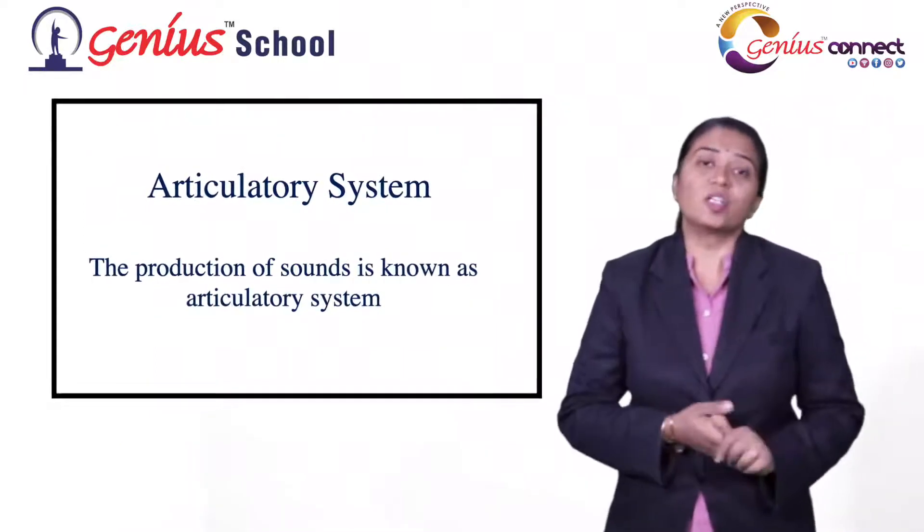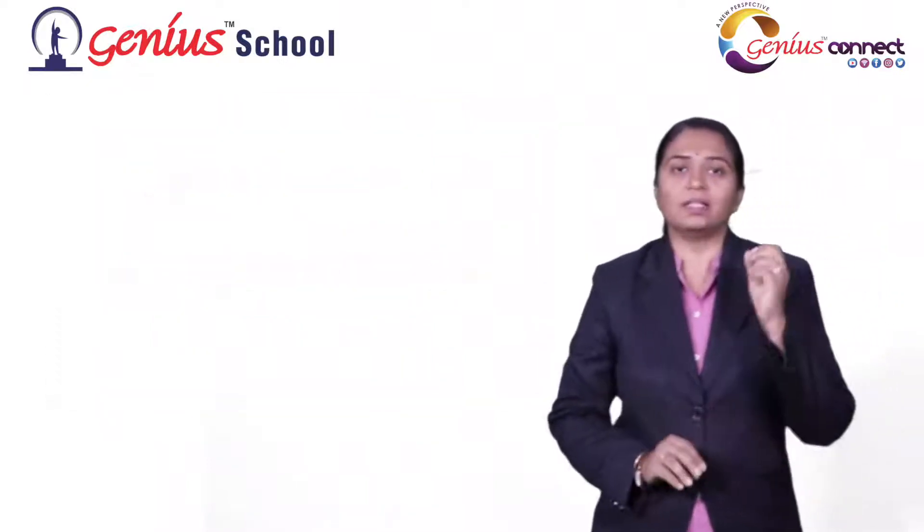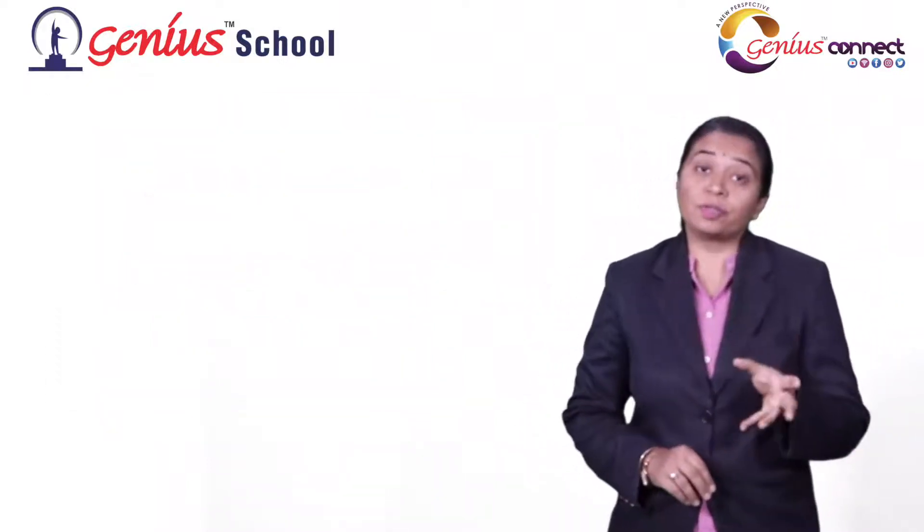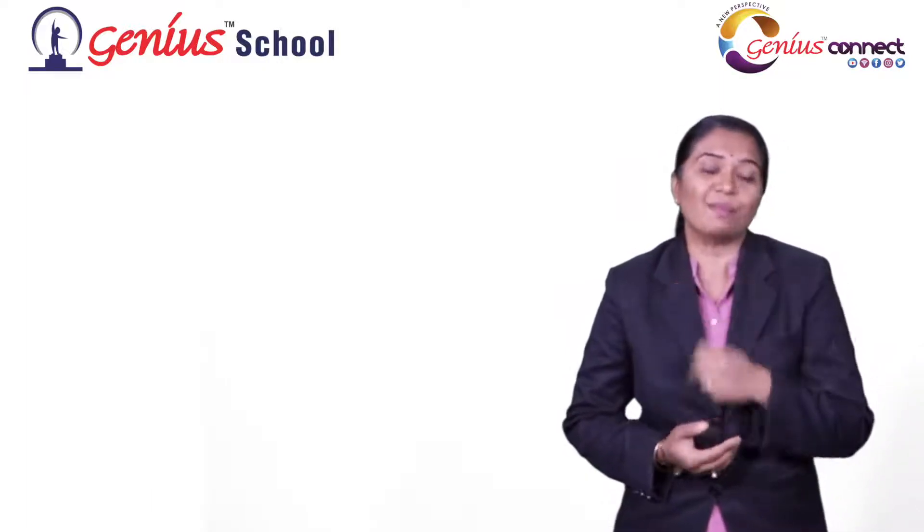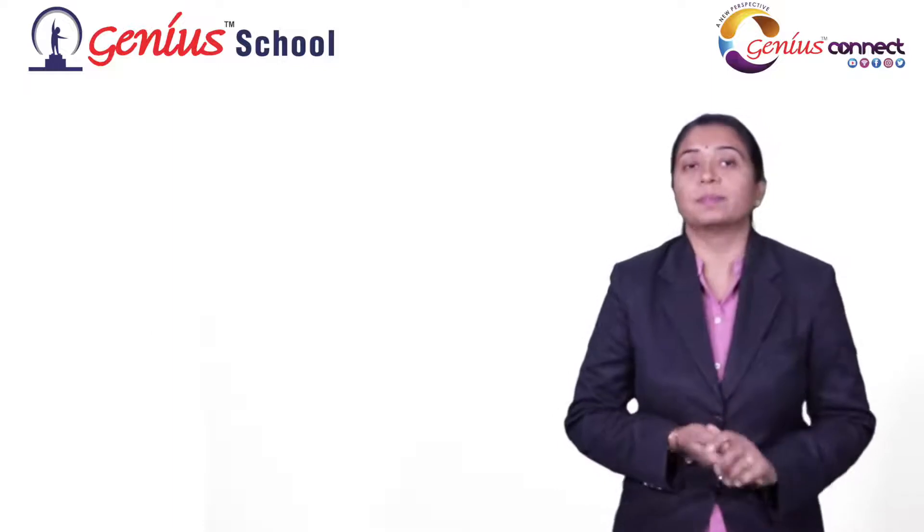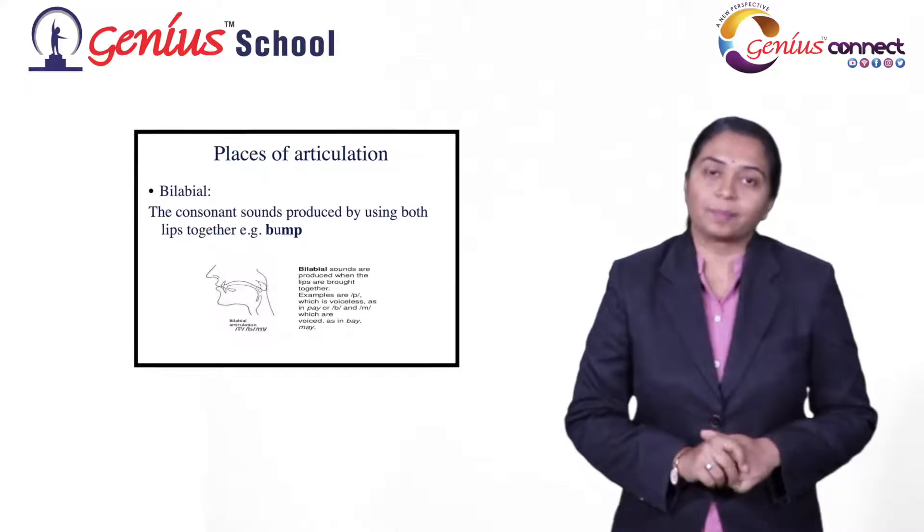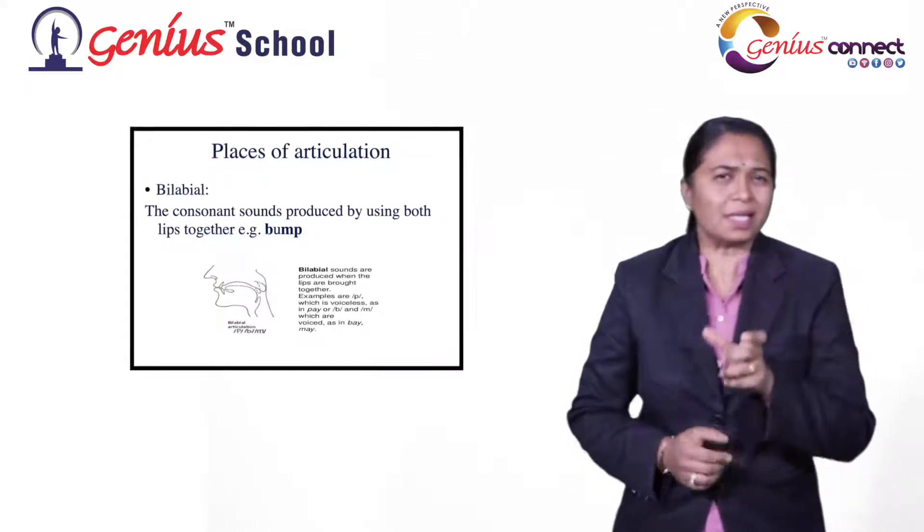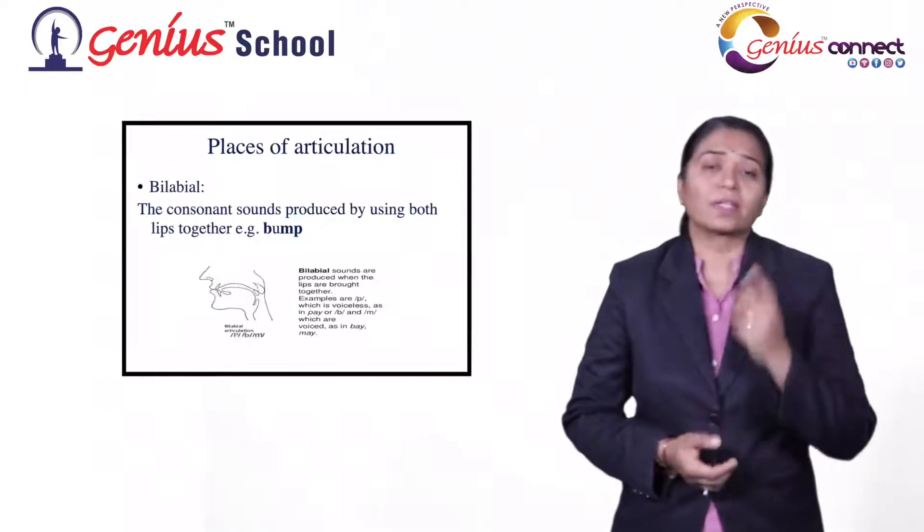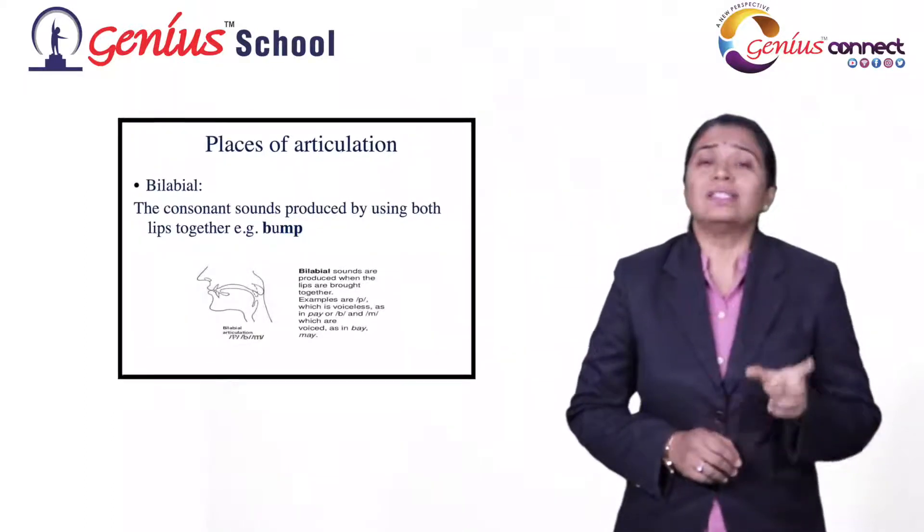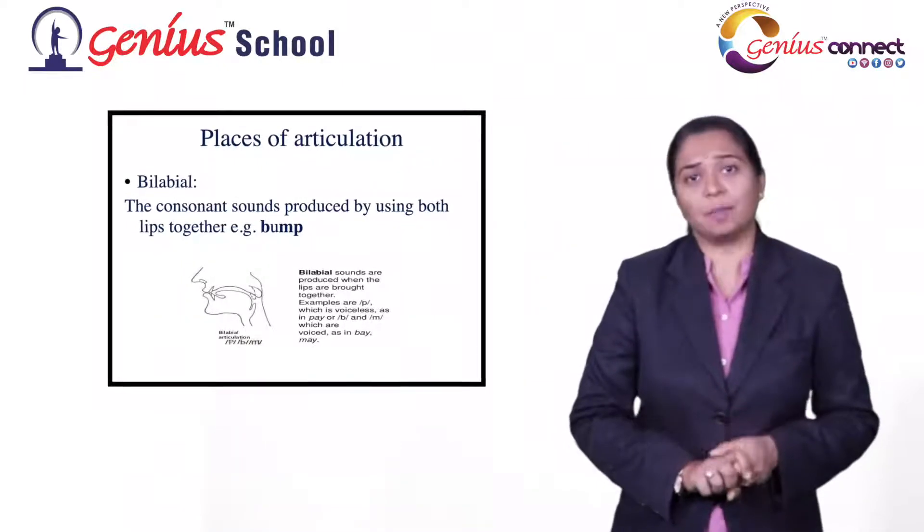Now, places of articulation. There are different sounds produced or articulated in different places inside our mouth or from the lips. The first is bilabial. The name itself suggests bi, two, labial, lips. So the sound produced by both the lips is bilabial.